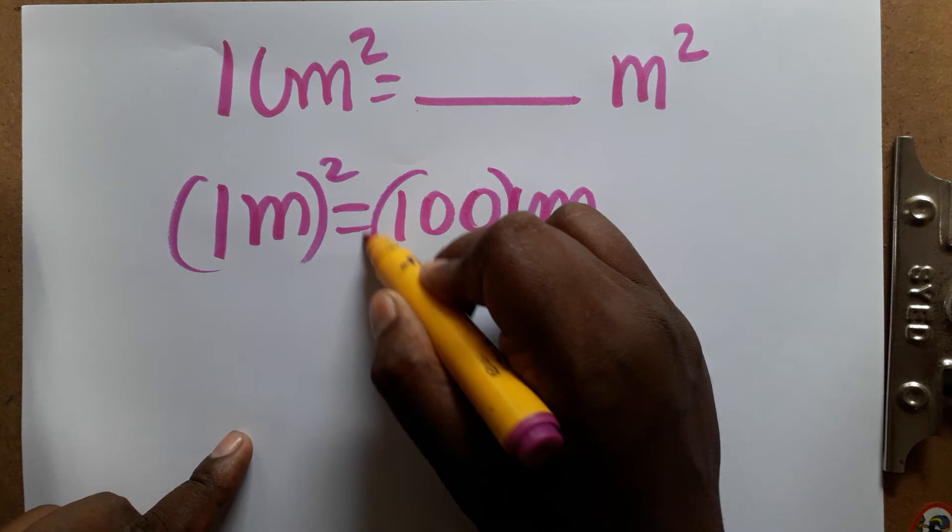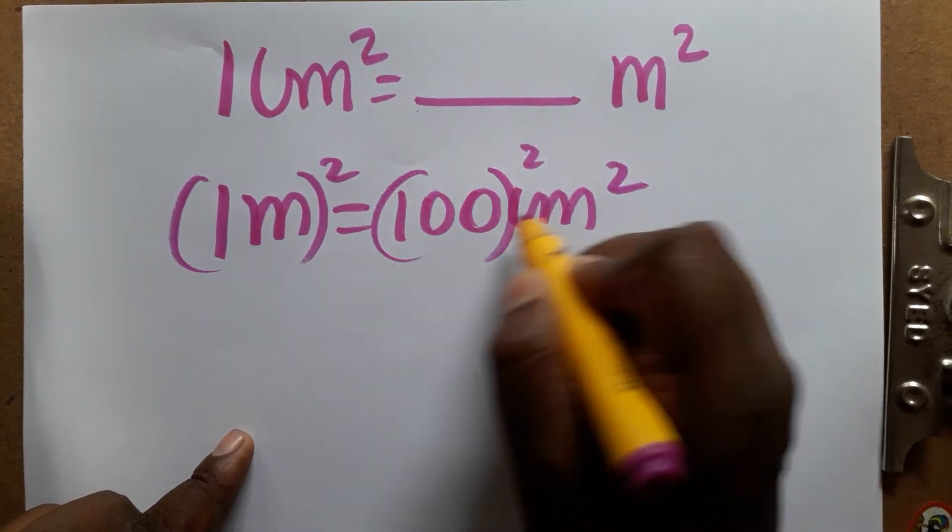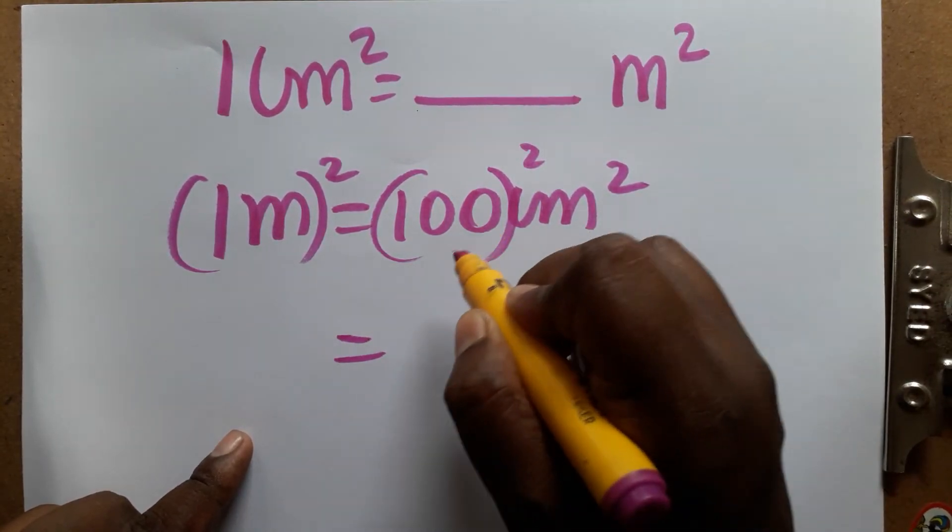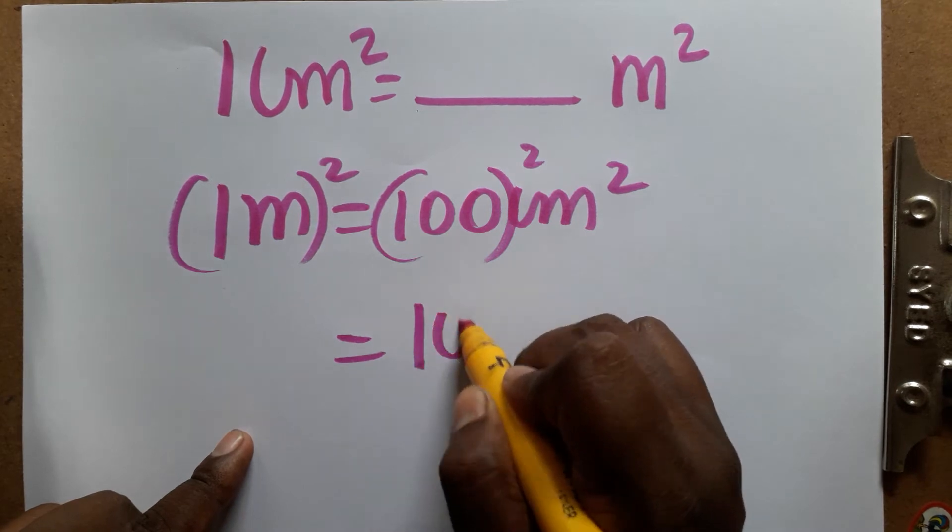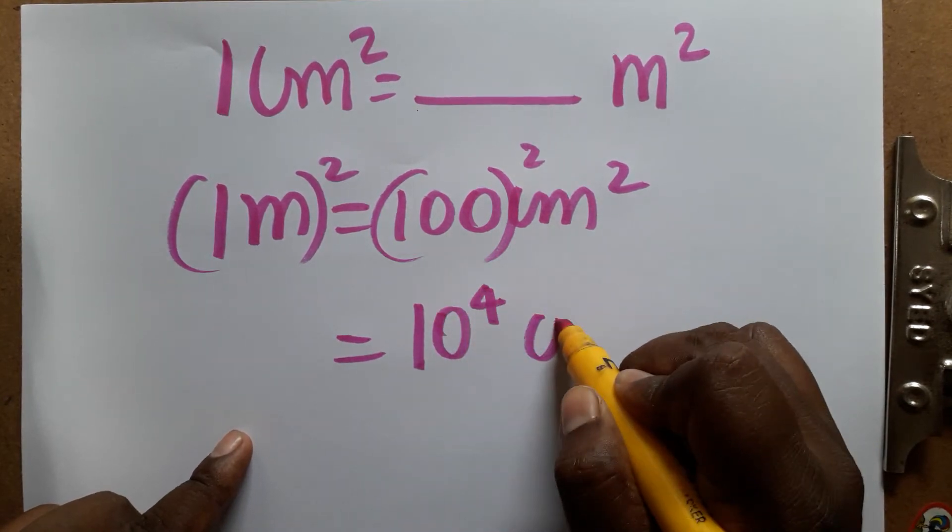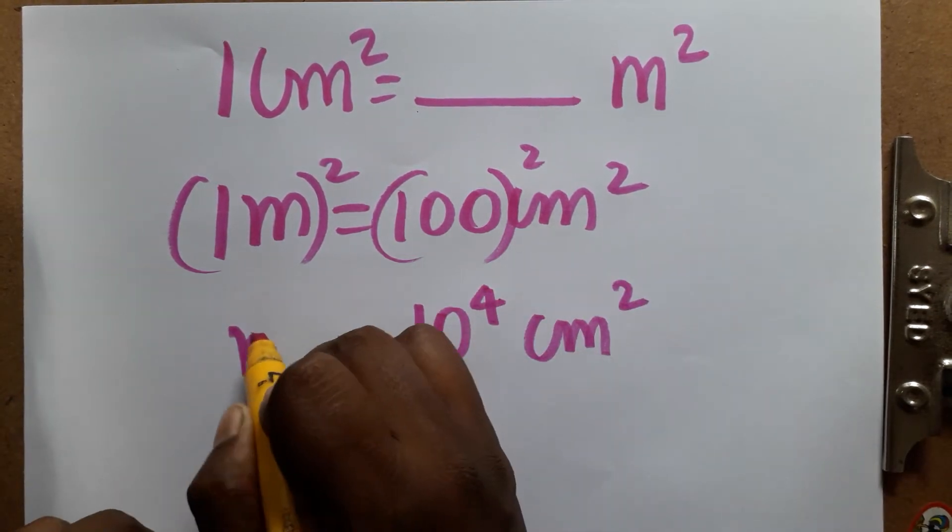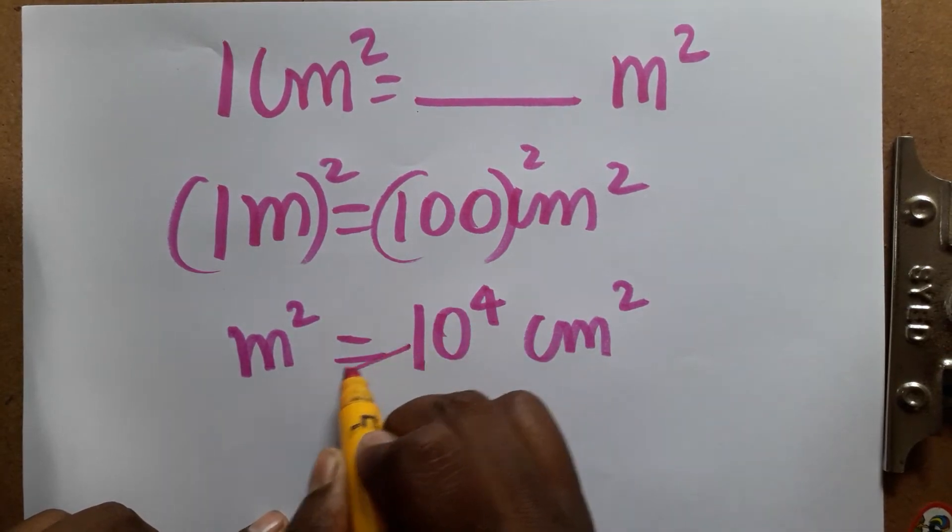meter squared - it's 100 squared centimeter squared. 100 squared is 10 to the power of 4, so we'll get 10 to the power of 4 centimeter squared. And if you want to find what centimeter squared equals, you can bring